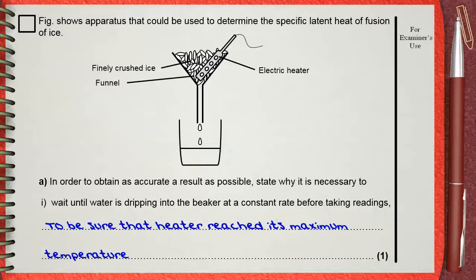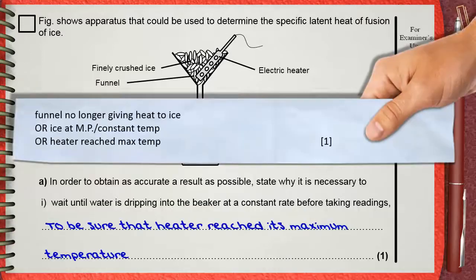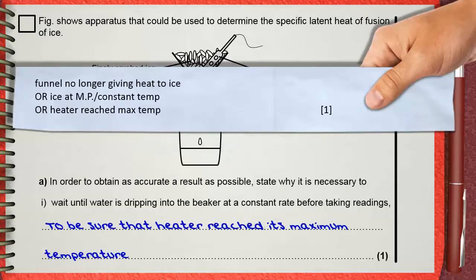That's why we wait until water reaches a constant rate of dripping. The mark scheme gives one mark for funnel no longer giving heat to ice. We wait until the funnel and ice have the same temperature, or ice at melting point.